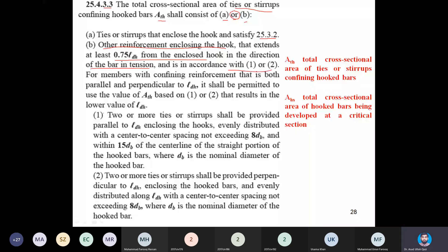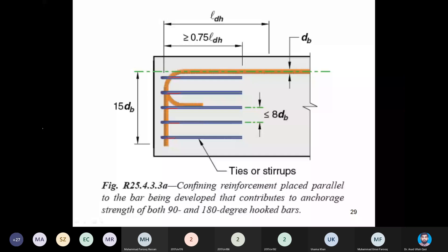Let us see these pictures. It is stated that if the bar is in tension, the tension direction is this one. It is stated that these ties are normal to the tail of the hook and up to 15 dB, which is from center of the bar to the terminal of the hook. These ties are uniformly spaced and their spacing is not greater than eight times the diameter of the bar which is under investigation. It is not the diameter of the tie, it is the diameter of the bar.